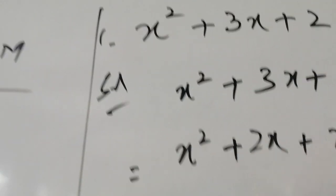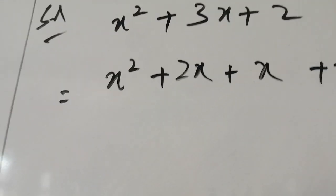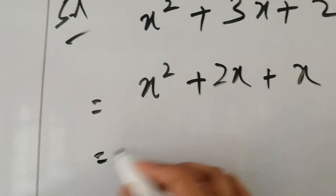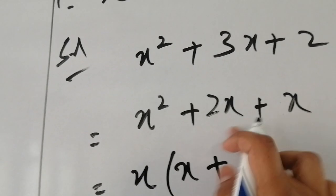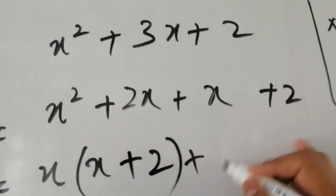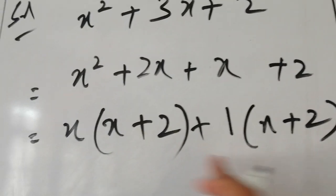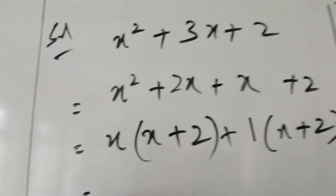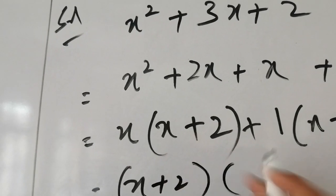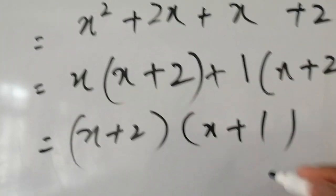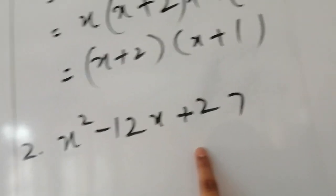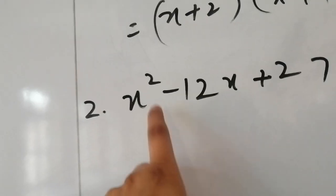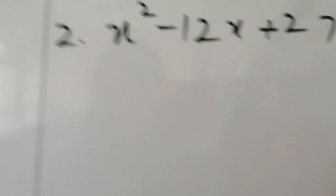We write x² + 2x + x + 2, then take common factors: x(x + 2) + 1(x + 2). The common factor is (x + 2), giving us (x + 2)(x + 1). This completes the first example. Now we take another version where the last term is positive but the middle term is negative.